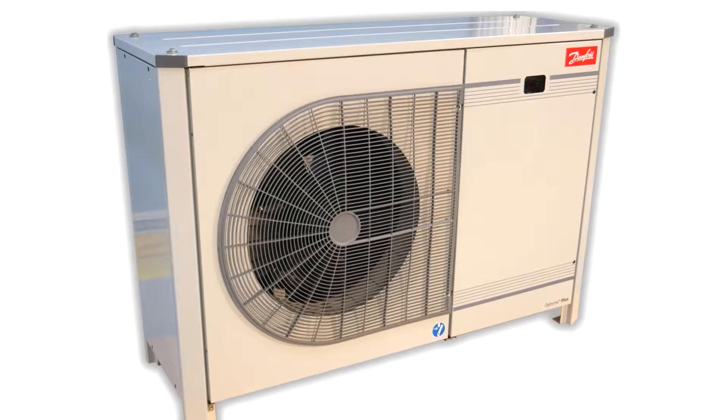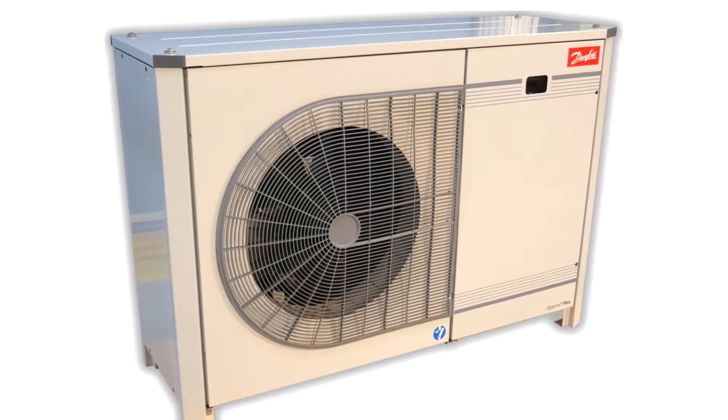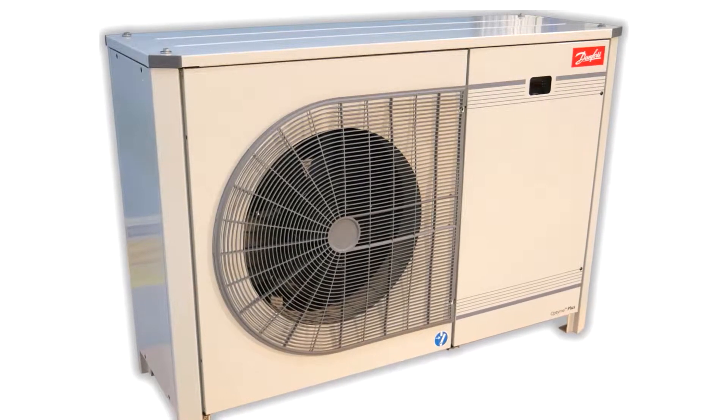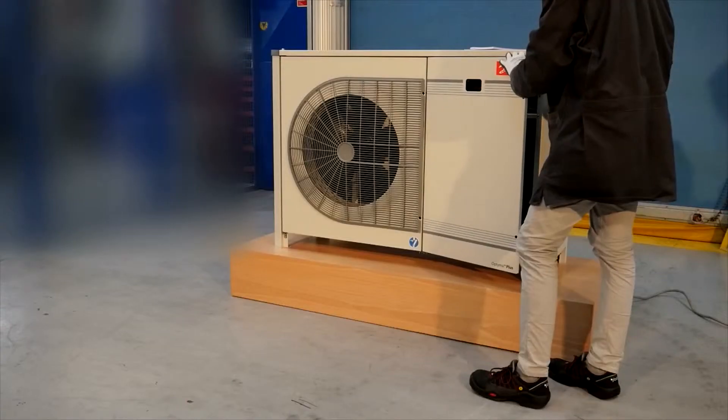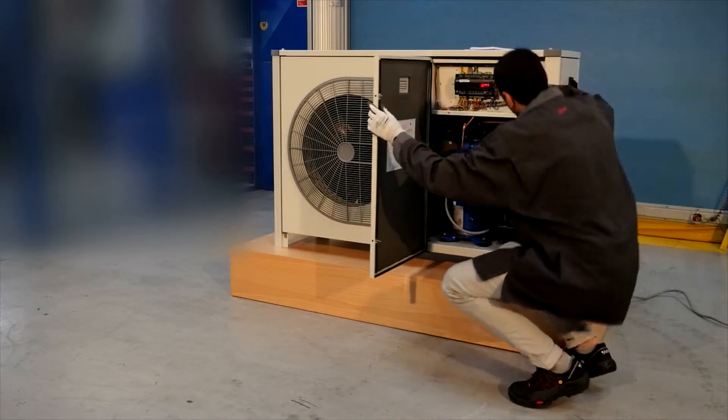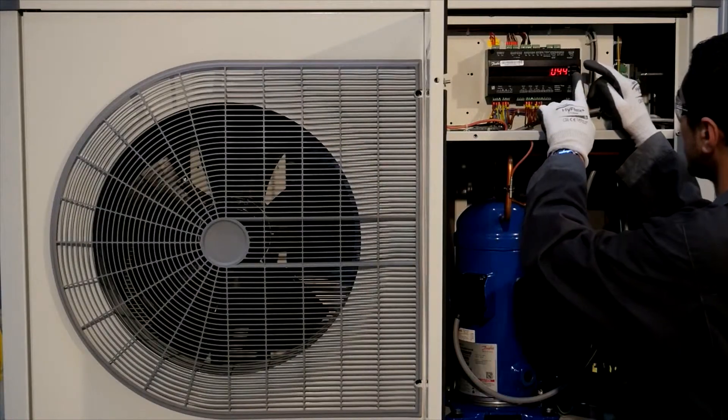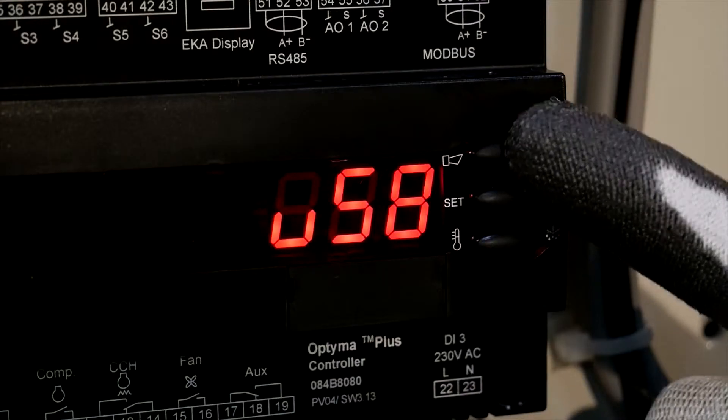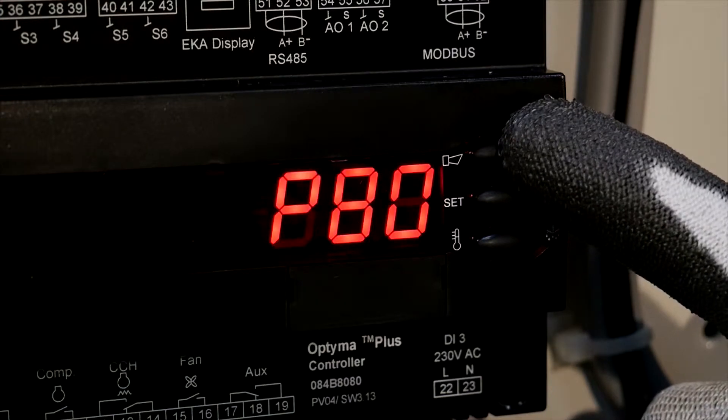If the Optima Plus controller is not working properly, you can still run the condensing unit on emergency mode. In this video we'll show you how to make an emergency wiring on the Optima Plus controller. This is a temporary solution and we strongly recommend to quickly replace the controller.